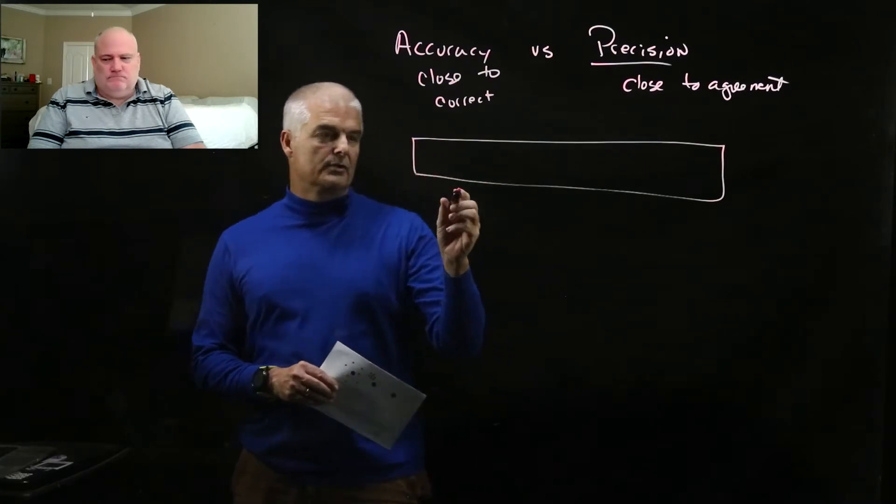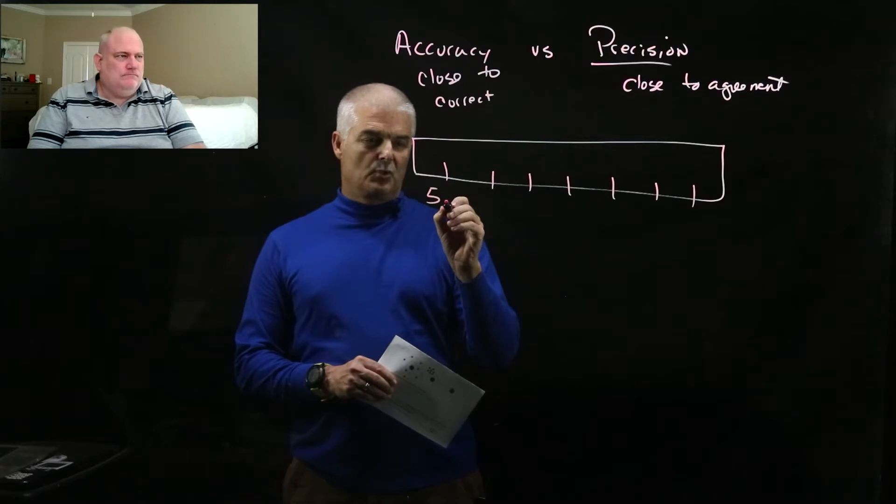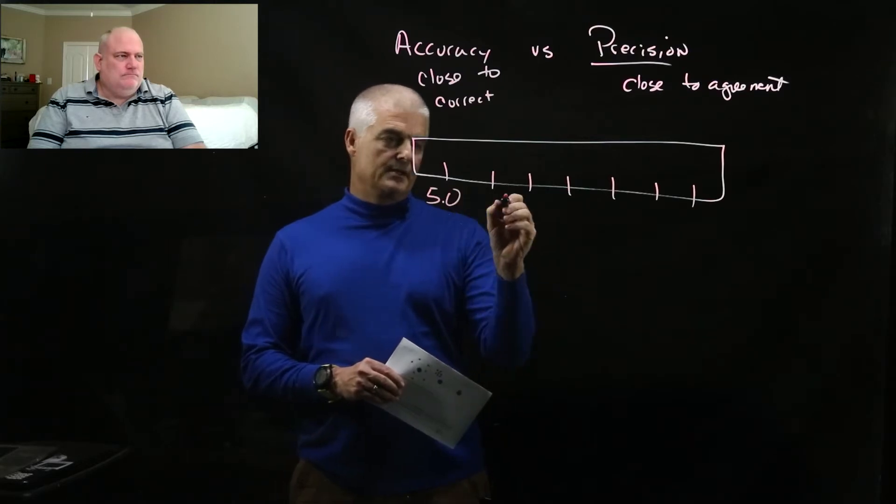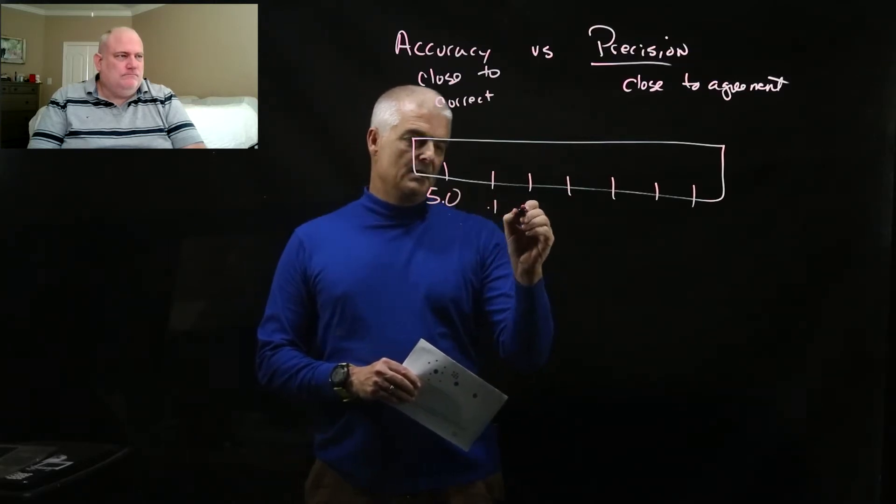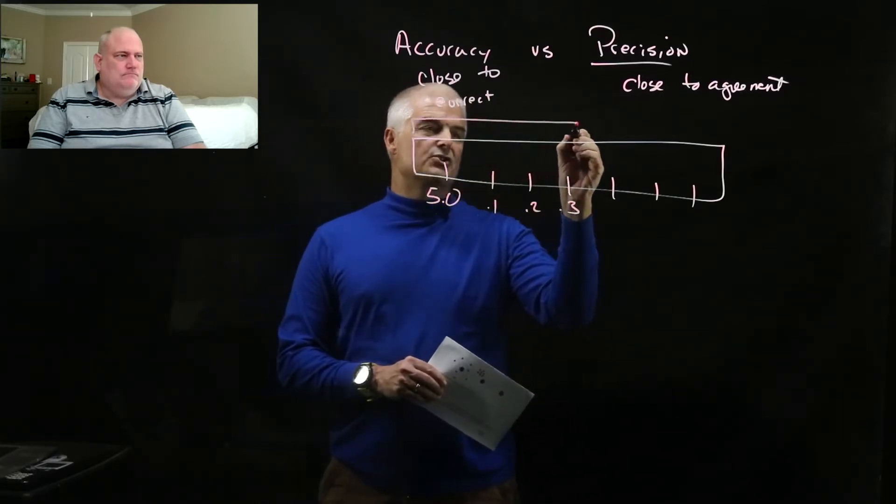So let's draw a picture. Let's say that I have a ruler here and let's say that this is 5.0, and then this is .1, .2, .3. And I've got something I'm measuring right here, some rod or something like that.